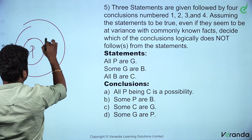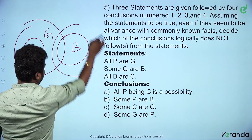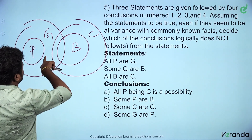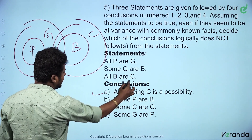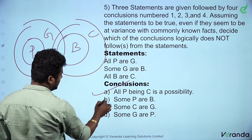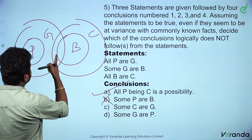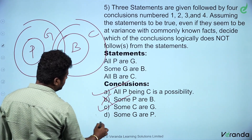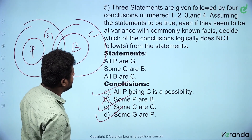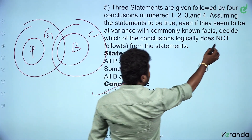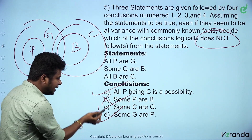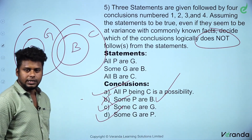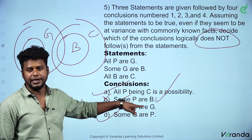All P are G. Some G are B. All B are C. All P are C is a possibility. Some P are B. Some C are G — that is true. Some G are P — that is true. 1, 3, 4 are true. What logically does not follow? Option B. The answer is Option B.